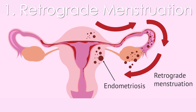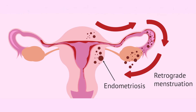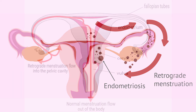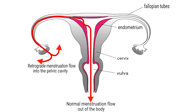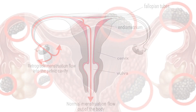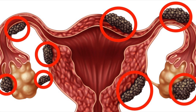Number one: retrograde menstruation. The most widely accepted theory for the cause of endometriosis is retrograde menstruation. This occurs when the menstrual blood and endometrial cells flow back through the fallopian tubes and into the pelvic cavity instead of out of the vagina. Endometrial cells then adhere to the pelvic organs and grow, causing endometriosis.